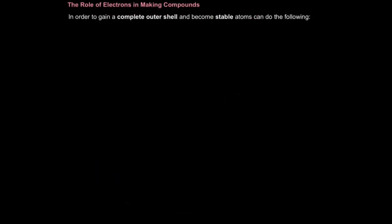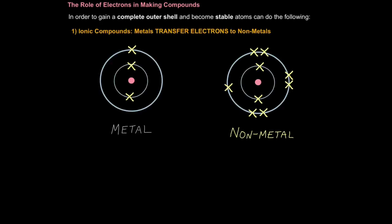So, now you can describe how electrons are arranged in shells, and link that to reactivity. First aim done. Now let's look at the role of electrons in making compounds. In order to gain a complete outer shell and become stable, atoms can do the following. Atoms can gain electrons and give away electrons, but where do these electrons come from, and where do they go to? Well, some atoms bond ionically to form ionic compounds.